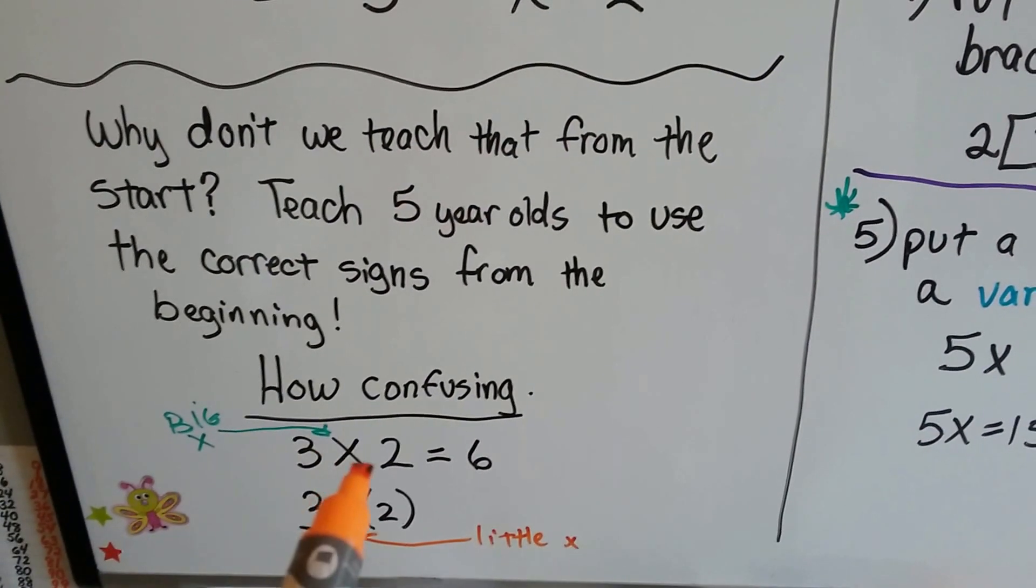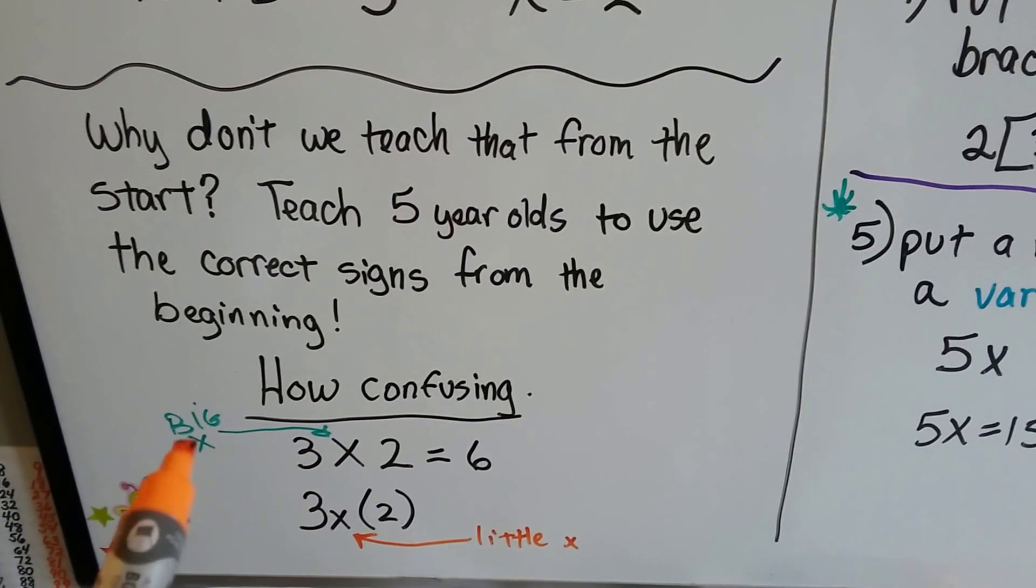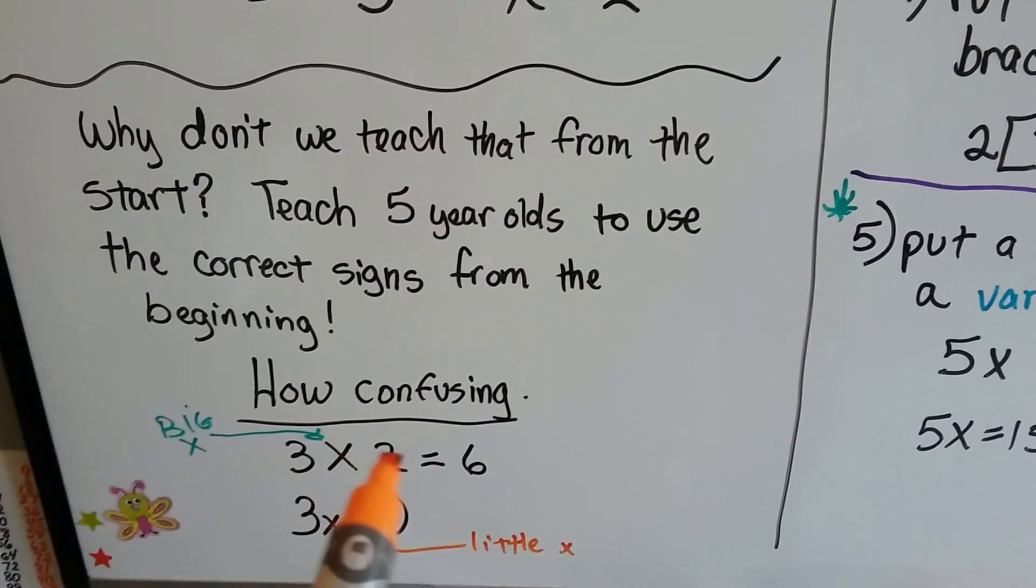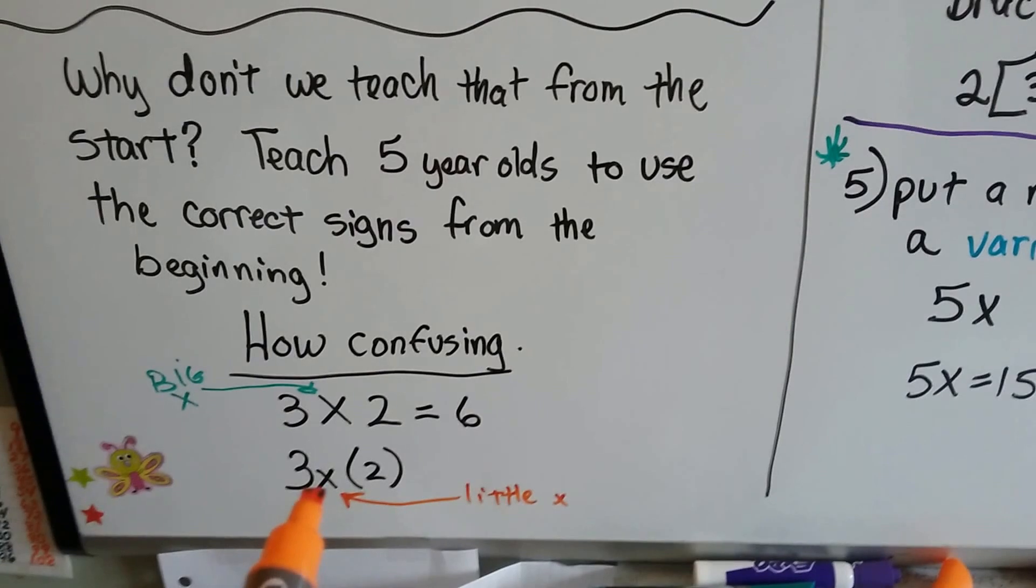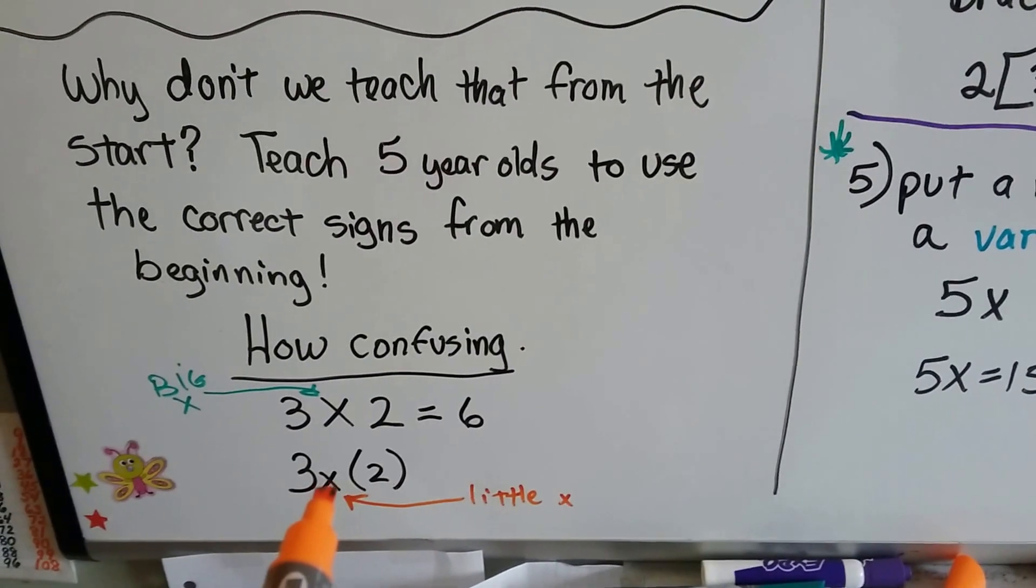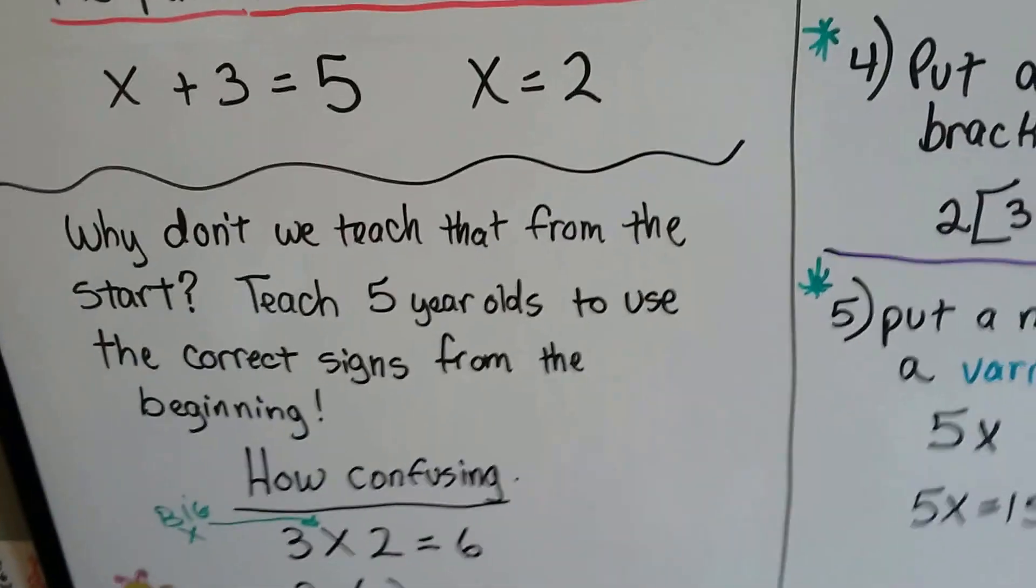So, here's how we can tell. When they're using it for multiplication, it's a big, huge x. It's the same size as the numbers. It's like a capital. When they're using it as a variable, it's a little x, like this. See? It's a lowercase x. So, that's one way to help you tell.